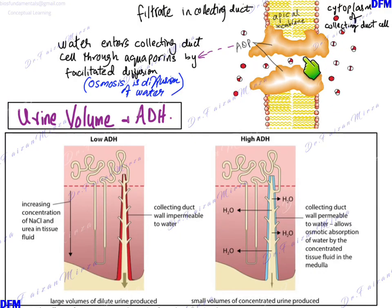Here you can see how water moves across the apical surface and enters into the cytoplasm of collecting duct cells. In the presence of low ADH, collecting duct is impermeable to water, so you will have large amounts of dilute urine being produced. But if there is high ADH concentration in blood, the collecting duct becomes permeable to water and low quantity of concentrated urine is produced.